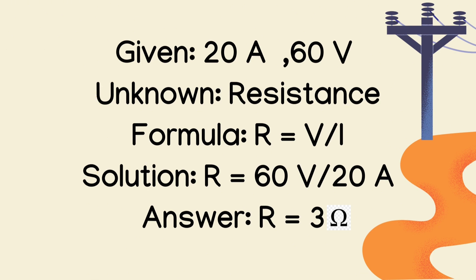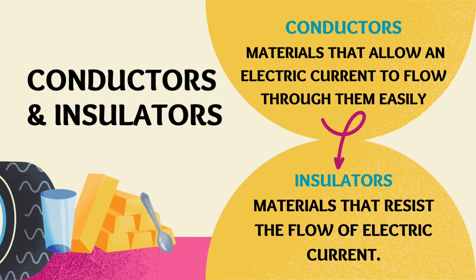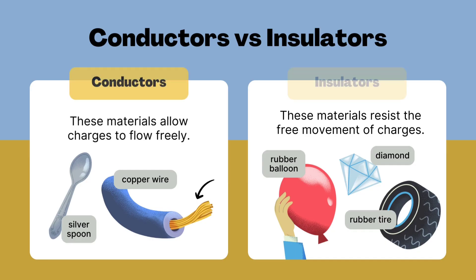In electricity, we have the terms conductors and insulators. Conductors are materials that allow an electric current to flow through them easily, while insulators are materials that resist the flow of electric current. Examples of conductors are metals like copper wire. Examples of insulators are rubber balloon, rubber tire, diamond, and many more.